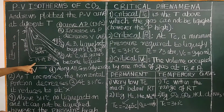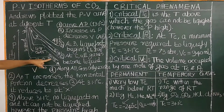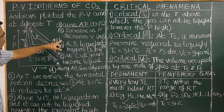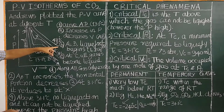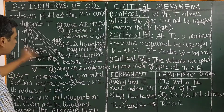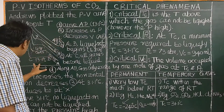For example, at 13.1 degree Celsius, the pressure-volume curve obtained is as follows. Similarly, with increasing temperature, at a higher temperature of 48.1 degree Celsius, a different PV curve is obtained. Let us now describe the low temperature curve — curve A, B, C, D — the isotherm measured at 13.1 degree Celsius.